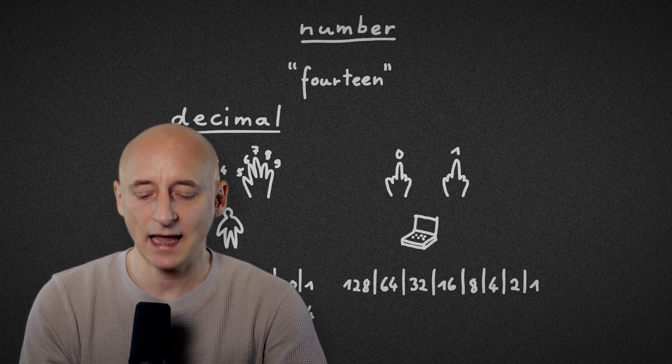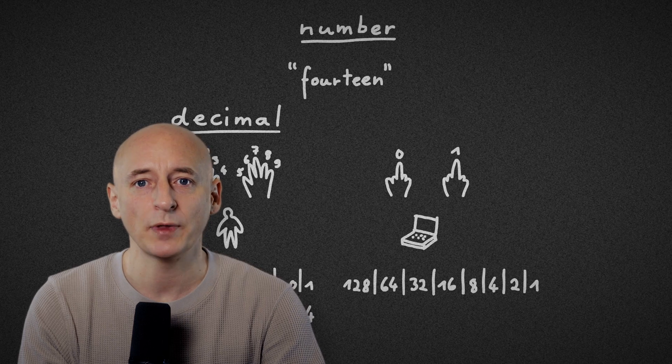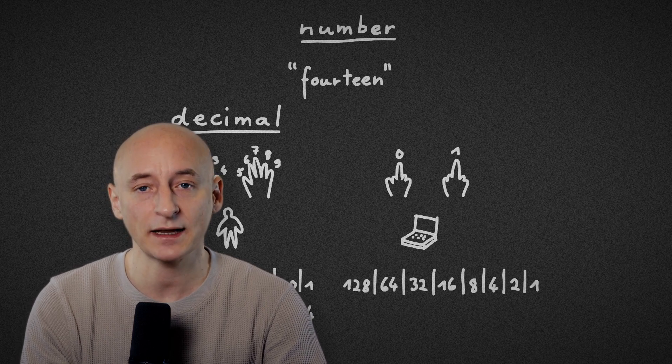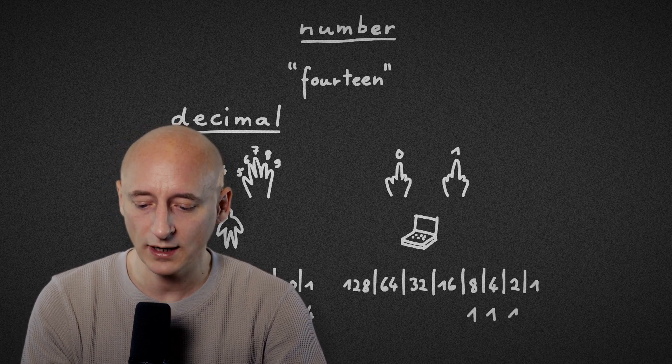The number fourteen is eight plus four plus two. So in that system, it looks like this – one, one, one, zero.